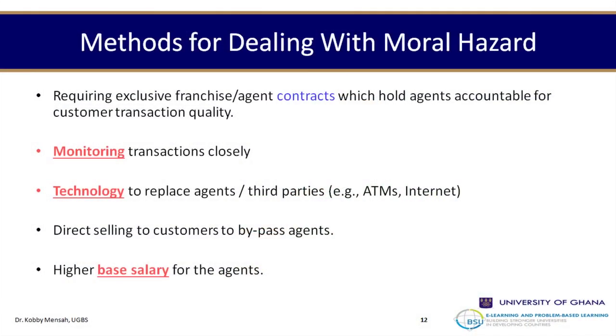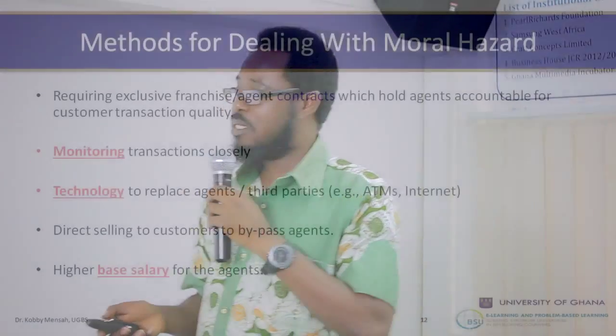A higher base salary for agents is another way to curb moral hazard — paying agents something tangible and appreciable that would make them responsible, ensuring they only bring in quality customers. You can also put in certain punitive measures so that when people come out with accounts that have moral hazards, they could be held responsible for their own actions.